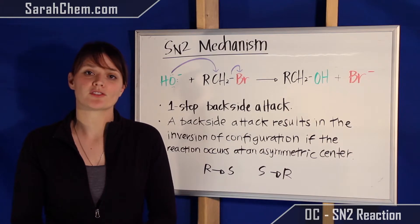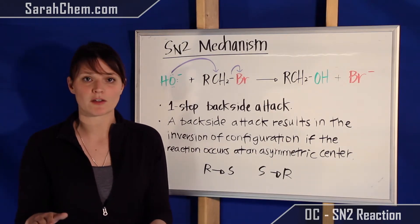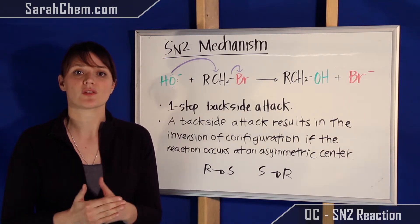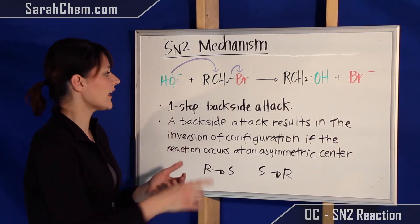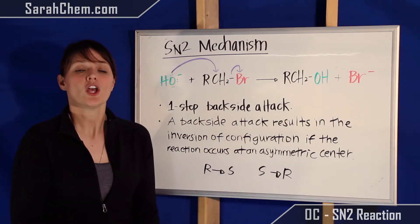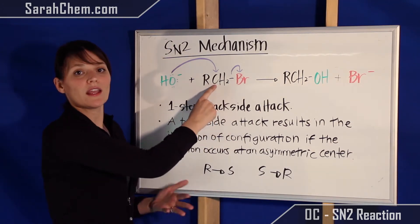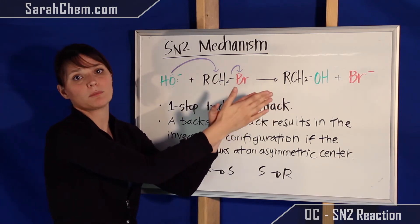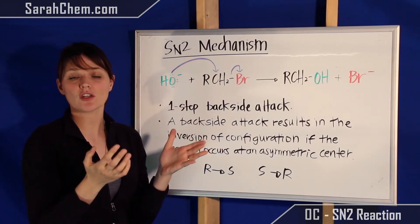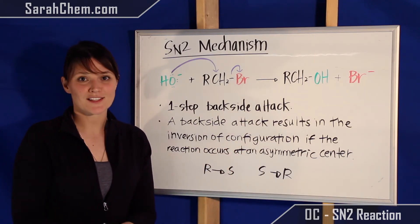One thing that's very important to understand is if you have a carbon that is an asymmetric center, an SN2 attack would result in an inversion of configuration. Meaning if it was R it would turn into S, and if it was S it would turn into R. In these reactions you always want to start by checking whether the carbon is an asymmetric center. In this example it's not, so you're not concerned with the configuration of the product. However, if you were given an example where that carbon did have a starting configuration, you would need to be mindful that the product has the opposite configuration. That's what's going on in an SN2 mechanism.